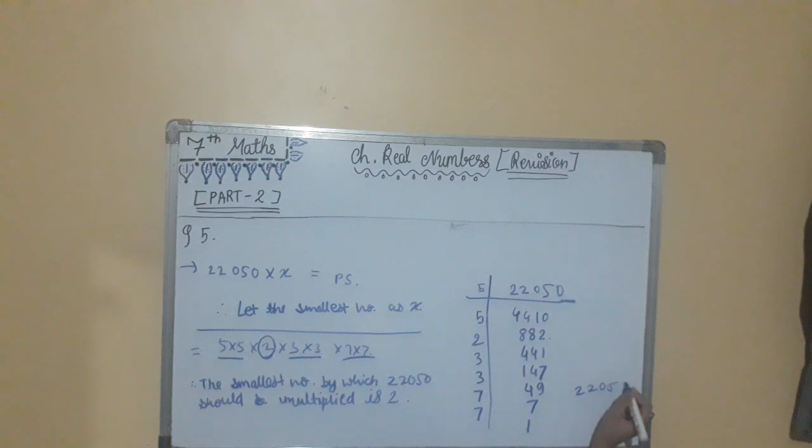After multiplying 2,2,0,5,0 by 2, by 2, the answer becomes 4,4,1,0,0. 2,2,0,5,0 multiplied by 2 is equal to 4,4,1,0,0, which is a perfect square of 210.